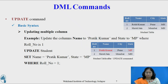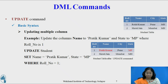Updating multiple columns using the update command. Example: update the column name to Pratik Kumar and state to MP where role number is 1. The SQL command is: UPDATE student SET name = 'Pratik Kumar', state = 'MP' WHERE role_number = 1. The above query will update two columns — name and state — in the first row, and the table student will now look as shown.